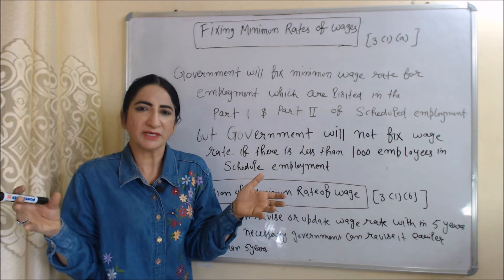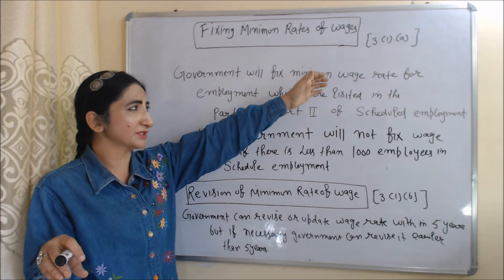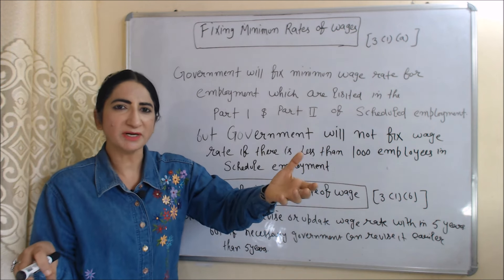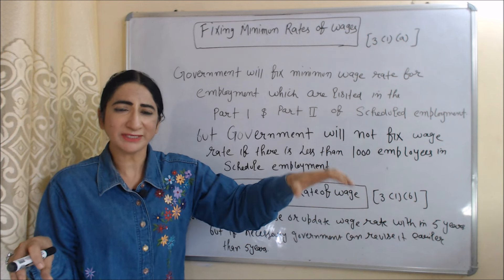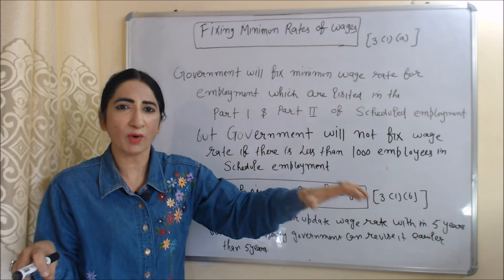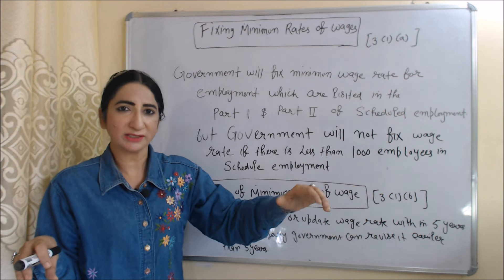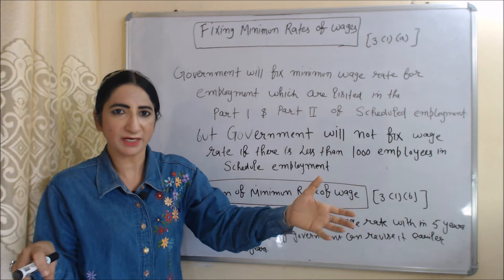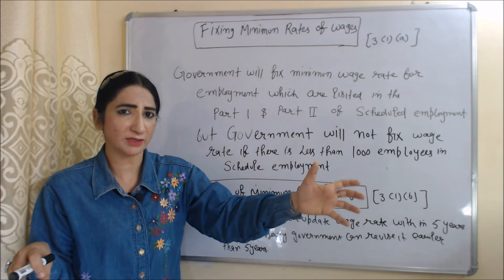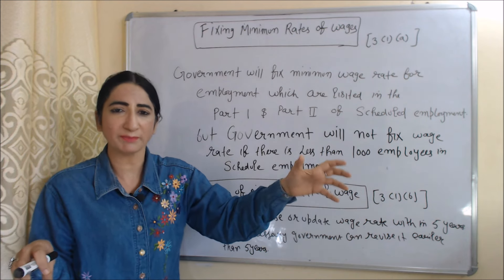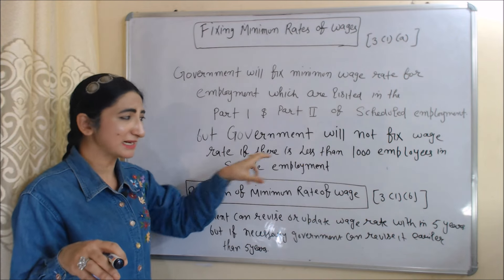According to Section 3(1)(a), the government will fix the minimum wage rate for those employments which are listed in Part 1 and Part 2 of the scheduled employment. However, the government will not fix the wage rate if there are less than 1,000 employees in a scheduled employment.